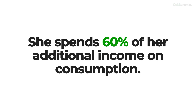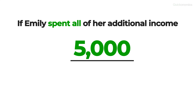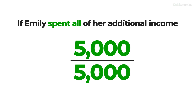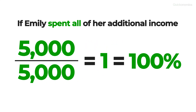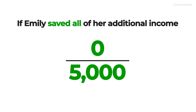That means Emily spent 60% of her additional income on consumption. By contrast, if Emily decided to spend all of her additional income, her marginal propensity to consume would be $5,000 divided by $5,000, which is equal to 1 or 100%. On the other hand, if she decided to save all of her additional money, her marginal propensity to consume would be 0 divided by $5,000, which is equal to 0.